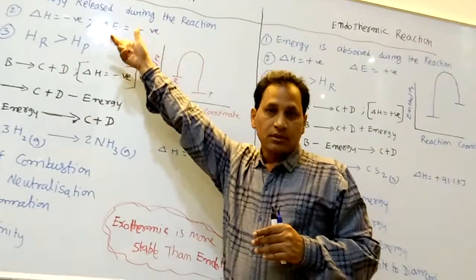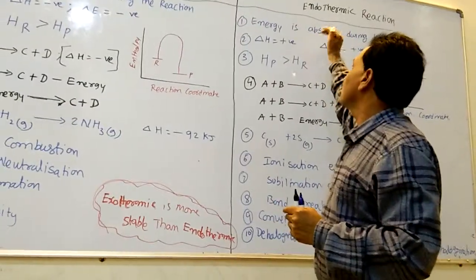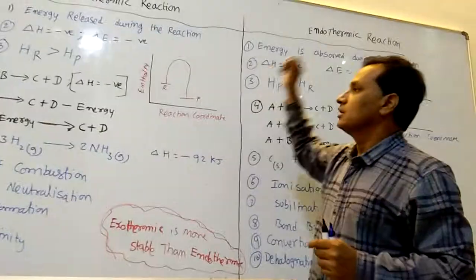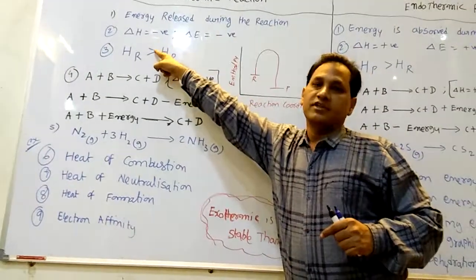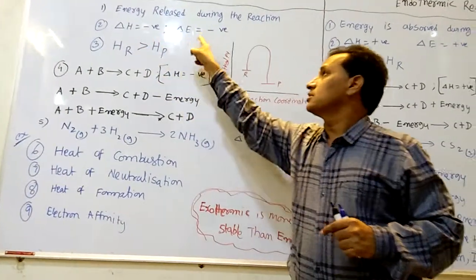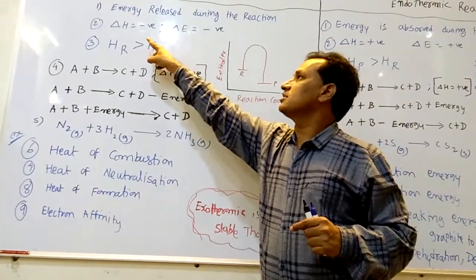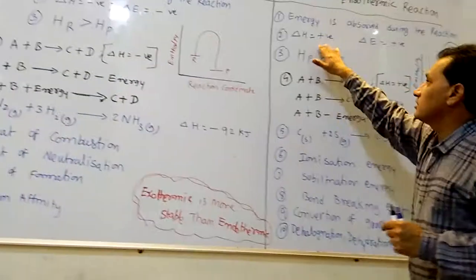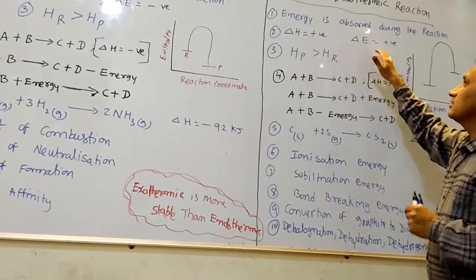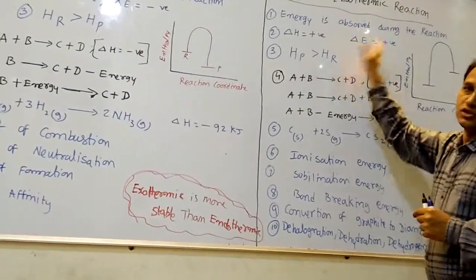Exergonic means exothermic, and endergonic means endothermic. The change of enthalpy and change of internal energy for exothermic is negative, and for endothermic is positive.